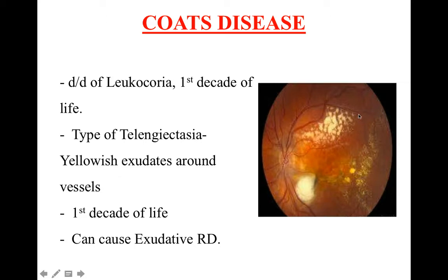In a clearer picture of the fundus, we would see more telangiectasia — that means new vessels forming on the temporal side of the retina. So Coats' disease is a type of telangiectasia where there are yellowish exudates all around the blood vessels, starting more from the temporal side. Remember, it is a differential diagnosis of leukocoria.